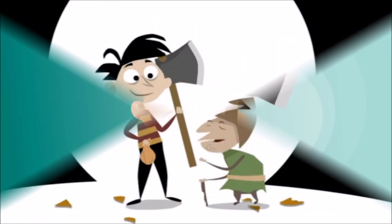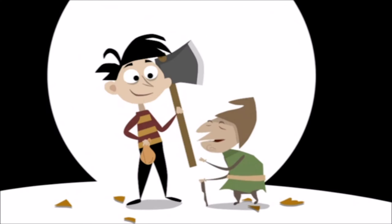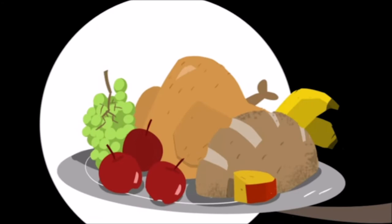When he came to the forest, the little old grey man met him likewise, and greeting him said, 'Give me a piece of your cake and a drink out of your bottle. I am so hungry and thirsty.' Dunderhead answered, 'I have only cinder cake and sour beer. If that pleases you, we will sit down and eat.'